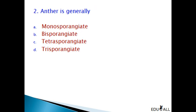Anther is generally: Monosporangiate, Bisporangiate, Tetrasporangiate, or Trisporangiate? We know that a dithecous anther is Tetrasporangiate, having 4 Microsporangia. Hence, the right answer is C — Tetrasporangiate.